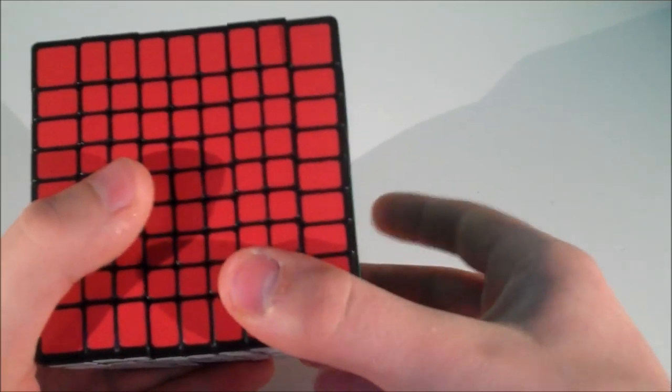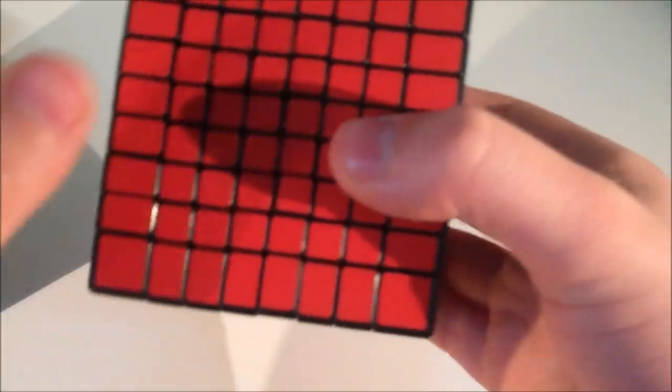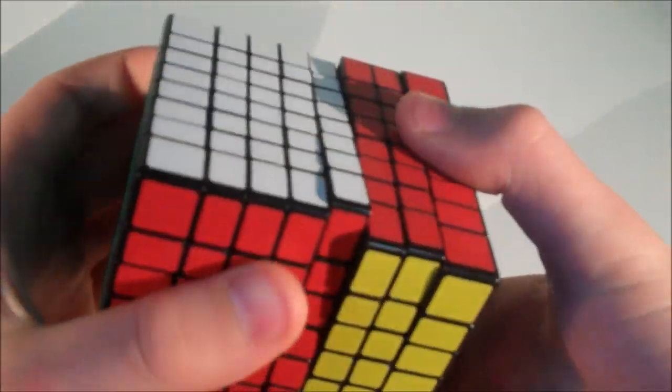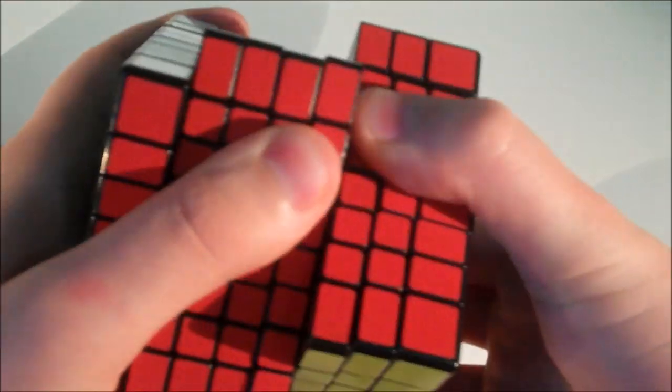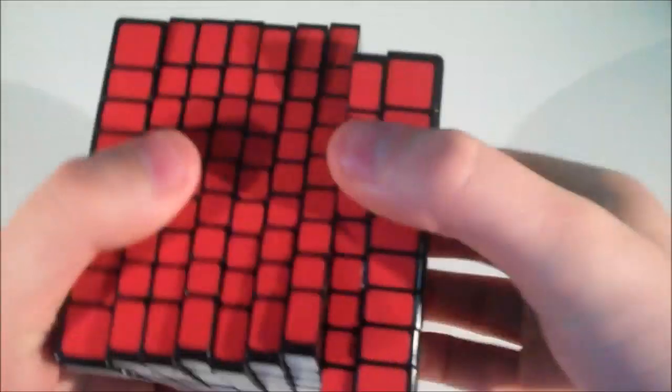You might remember if you saw my 8x8 review that the layers can catch on each other on the 8x8. It has kind of worn down since I've broken it in, but if I push you can kind of hear that snapping, and that's the plastic rubbing on each other. But on the 9x9 there is pretty much no catching at all. It's very nice and there's no excess plastic that I can feel, so it's good that Shengxiao fixed that on this puzzle.